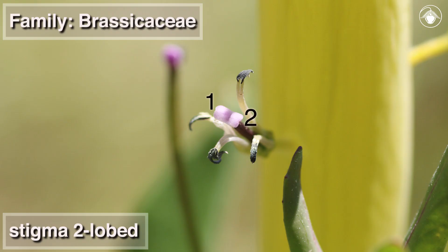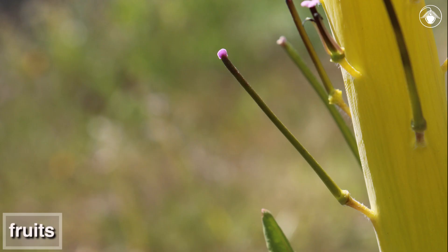The stigma is distinctly two-lobed, an indication of the two carpellate ovaries of this and other species of the mustard family. The cylindrical fruits extend upright from the stem as they mature.